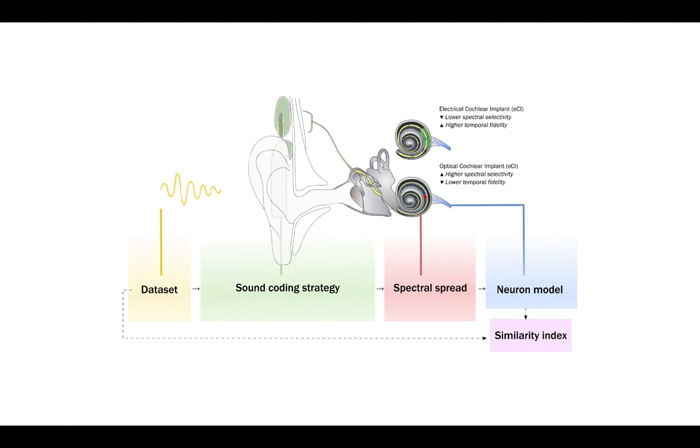In our research, we developed a computational framework to explore this potential. We combined sound coding strategies and the 3D ray tracing model of the human cochlea to investigate how light propagates inside the cochlea. We also created a neuron model responsive to both current and light, alongside a similarity index to evaluate performance.